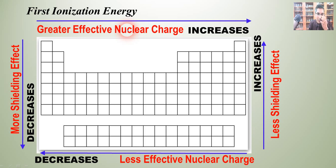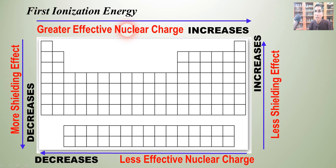We have some very complex ideas at play here — effective nuclear charge, shielding effect, and Coulomb's Law. I hope I was able to simplify these for you and that you learned something about chemistry and why first ionization energy has the trend that it does. If you learned something, please give me a thumbs up. Hope you subscribe to my channel and follow through on AP Chemistry — it's a very rewarding course. I hope to see you again where we can learn some more chemistry together.